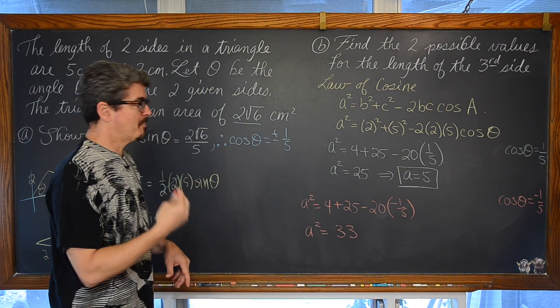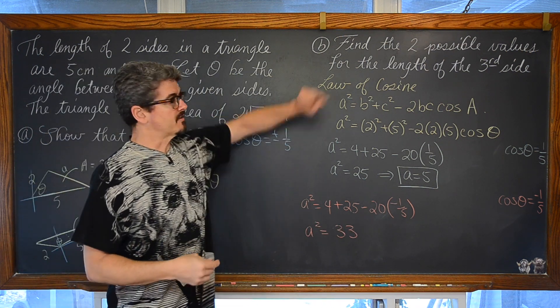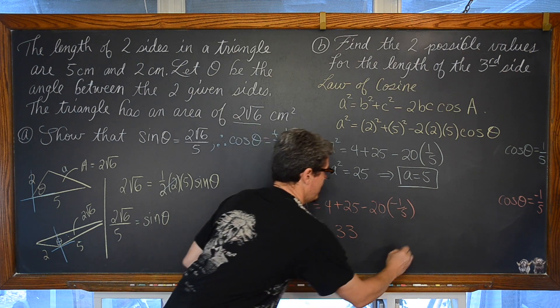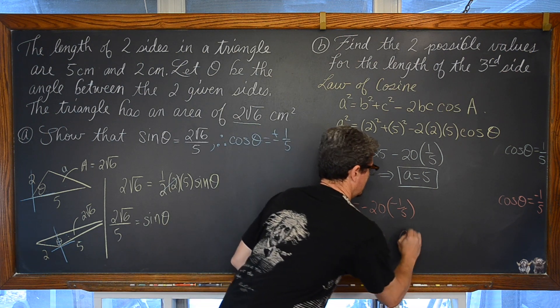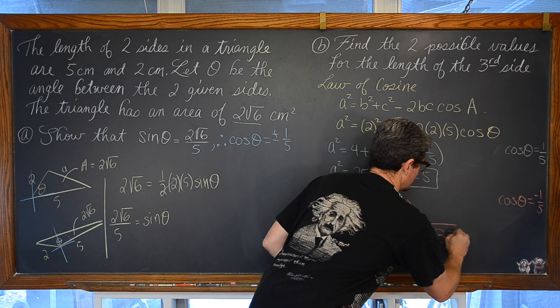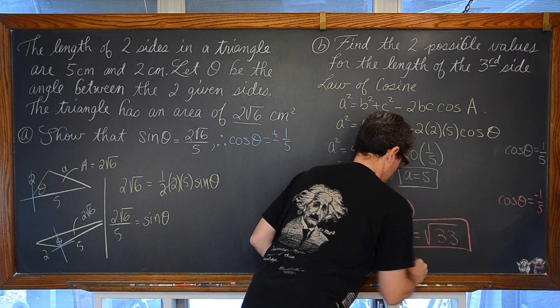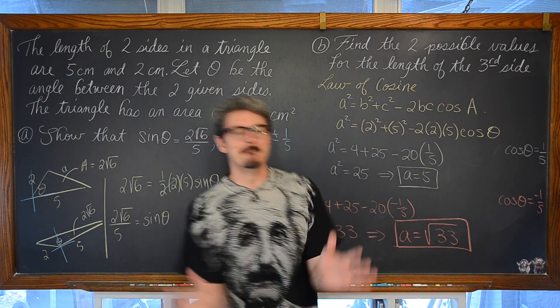Thus, the other possible length of the third side is, a is equal to the square root of 33. I'm Mr. Tarrou. BAM! Go do your homework!